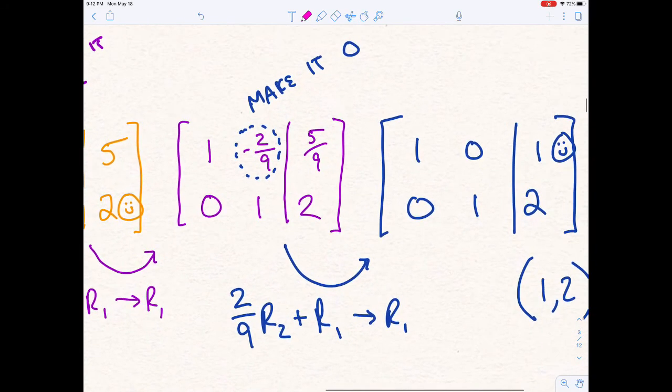When we do that, we get this thing in purple, where now we have three of the four things that we want. We have the 0, we have the diagonal of 1s. So now we just need to make that negative 2 ninths into a 0. And to do that, we're going to go ahead and modify the second row. You notice how we're messing around with the second row here. We're taking r sub 2 and we're multiplying it by 2 ninths. That's the opposite of negative 2 ninths. If they're opposites, we can then add them together.